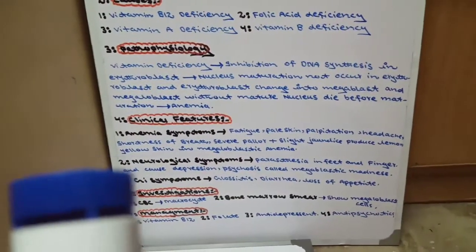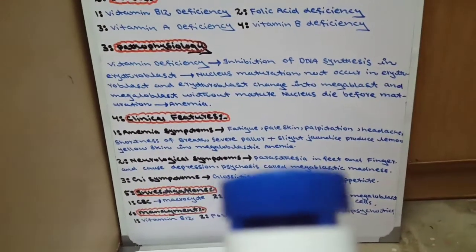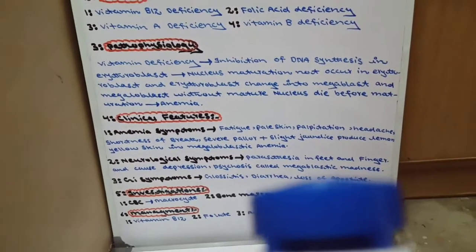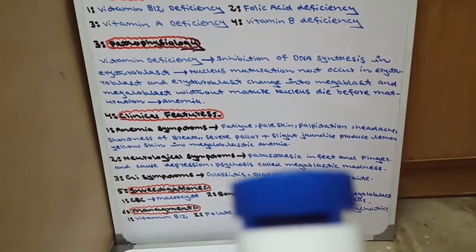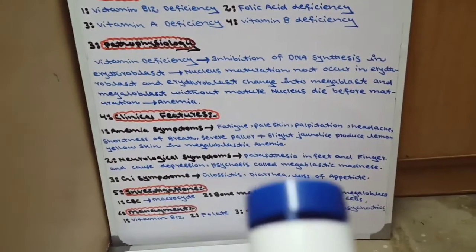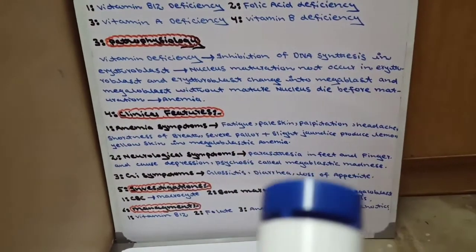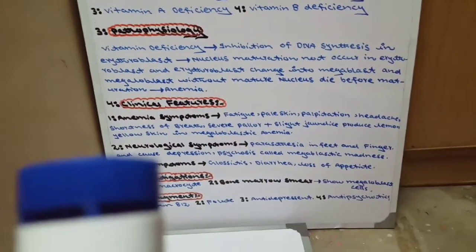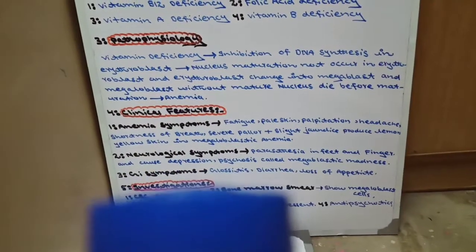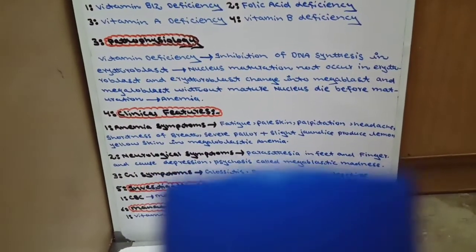Vitamin B12 deficiency ki wajah se jab serotonin nahi hoga, toh depression hoga, psychosis hoga. Is depression aur psychosis ko megaloblastic madness kehte hain, kyunki is mein patient reality se door ho jata hai — hallucination aur delusion feel hone lagte hain. Toh yeh hain neurological symptoms: paraesthesia, depression, psychosis — aur depression aur psychosis milke kehlaate hain megaloblastic madness.